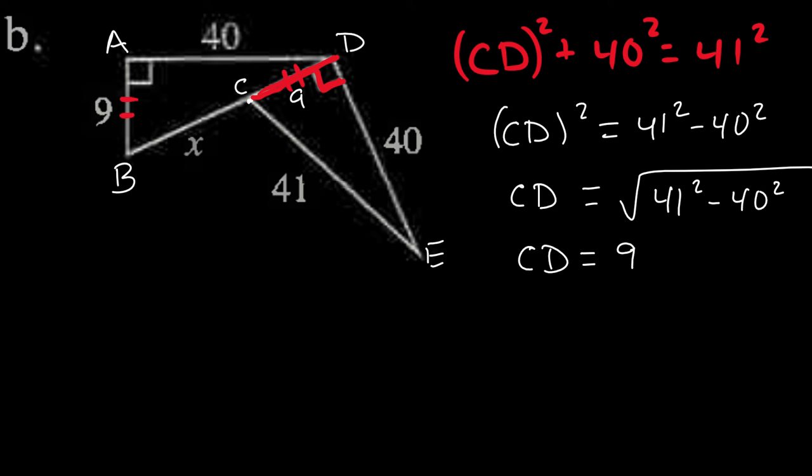Now I can mark a few things congruent. This segment is congruent to this segment because they're both 9 units long. Also, these legs are both marked 40. And these right angles are congruent. I was tempted to say hypotenuse-leg, but I don't know both hypotenuses are congruent yet. But since these angles are 90 degrees, they're congruent. So I get side-angle-side congruence. The two triangles are congruent by SAS.